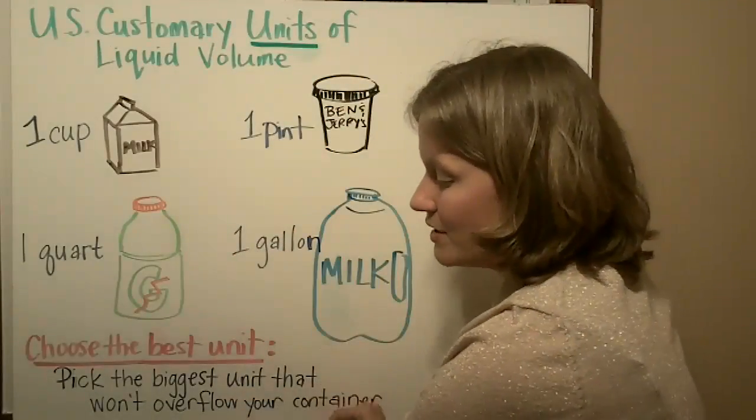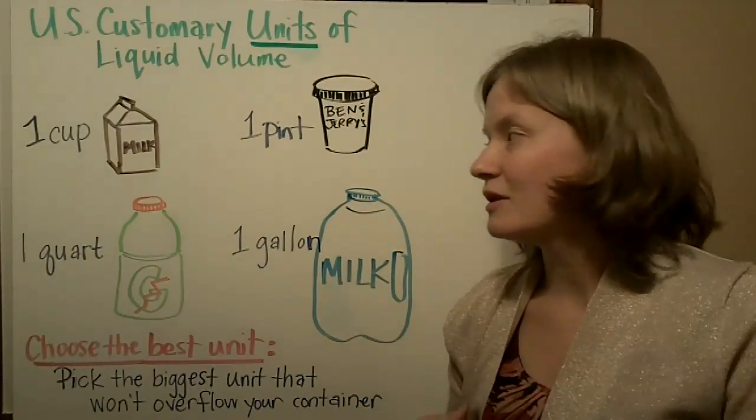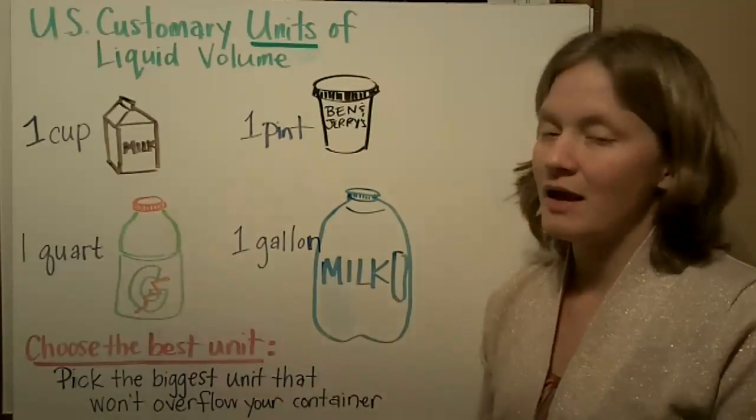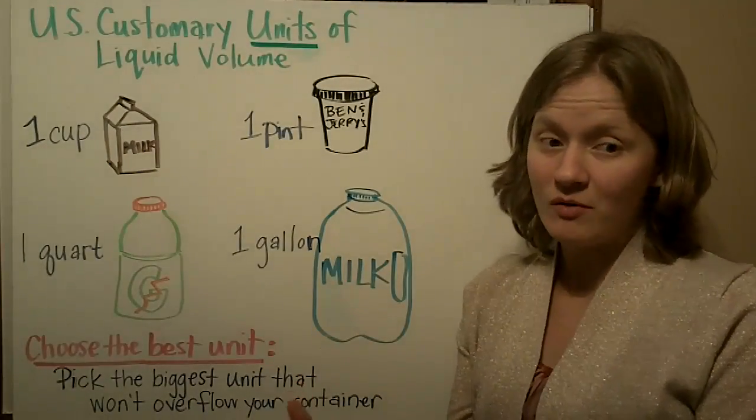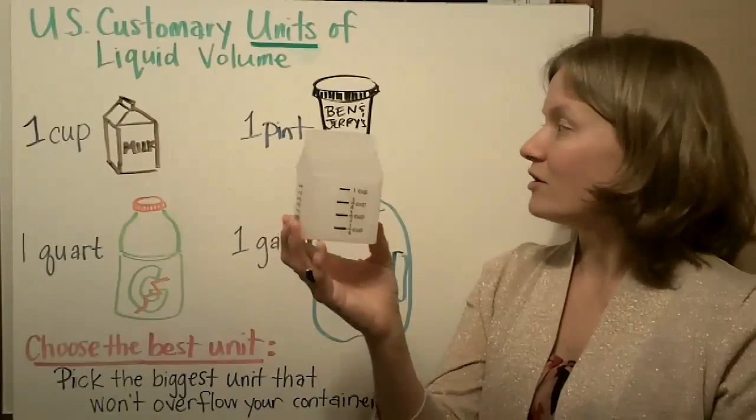There are four units of U.S. customary volume that we need to know. First, a cup is the size that you get your milk in at lunch. This is what it looks like in our set in our classroom.